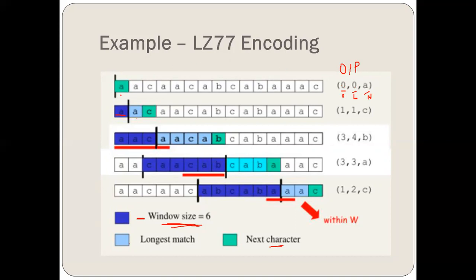The first alphabet encountered and moved into the window is A. This is the first character being encountered. Because there is no offset and no matching for the first symbol, zeros will be given for offset and for length. So the output is 0, 0, A. Whatever symbol we encounter first time will always have offset as 0.